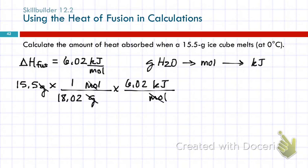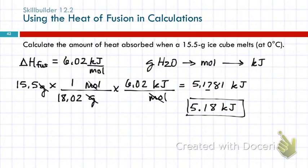15.5 divided by 18.02 times 6.02. Here I've got three significant figures. So 5.17. And keep two extras. The unit is kilojoules. And then when I round that, here I'm rounding in the hundredths place, so I don't need to worry about changing the value of the number when I round. So 5.18 kilojoules of energy. That's how much is absorbed when the ice cube melts.